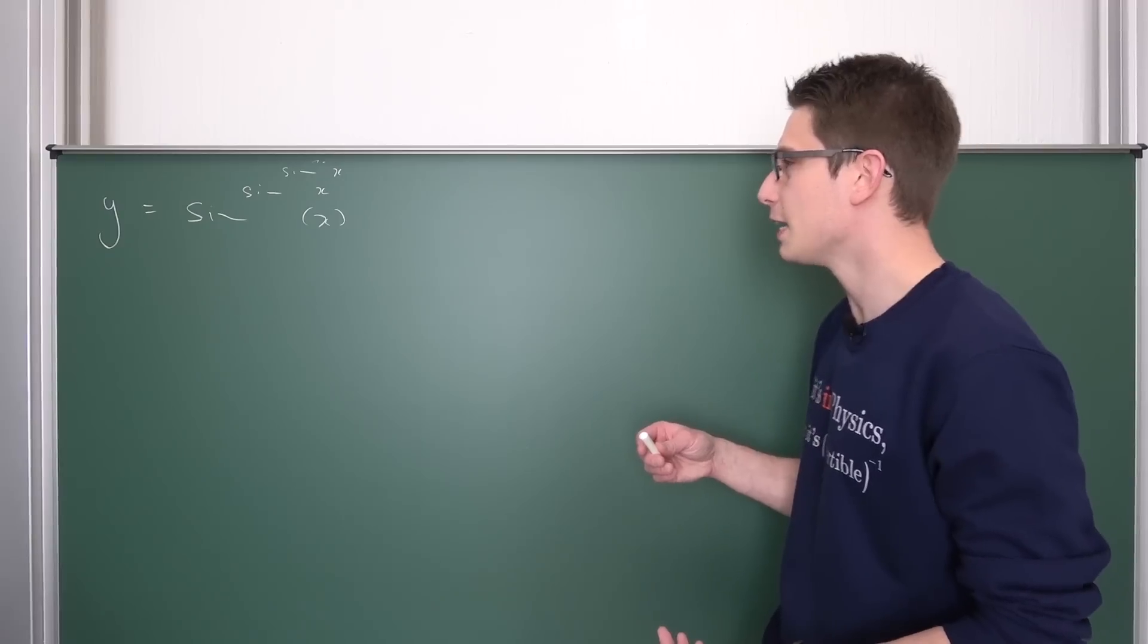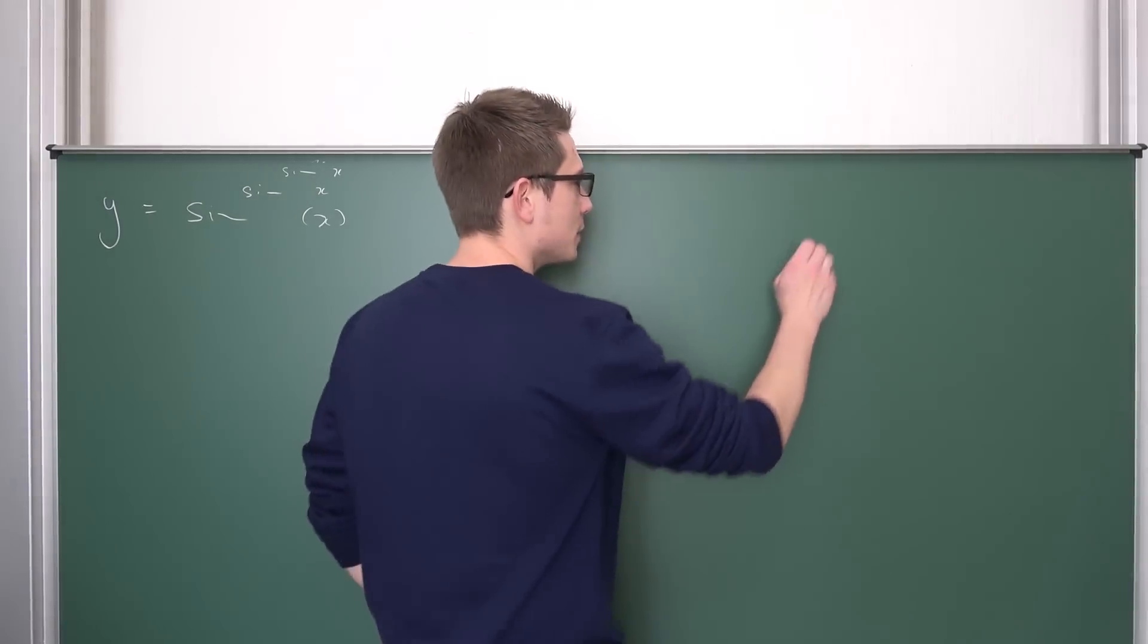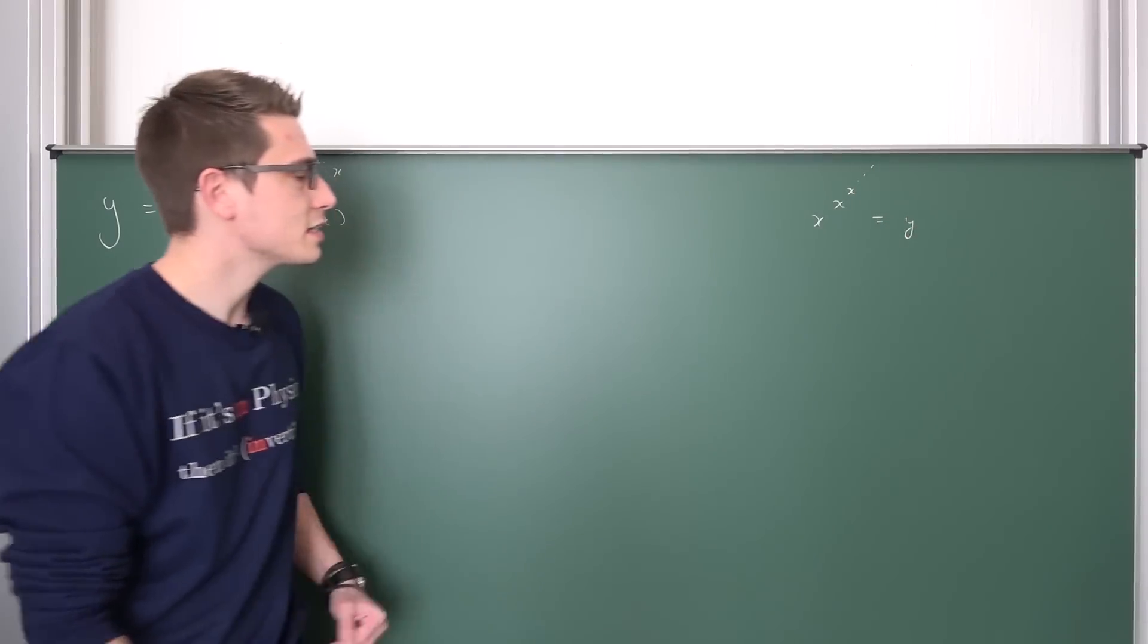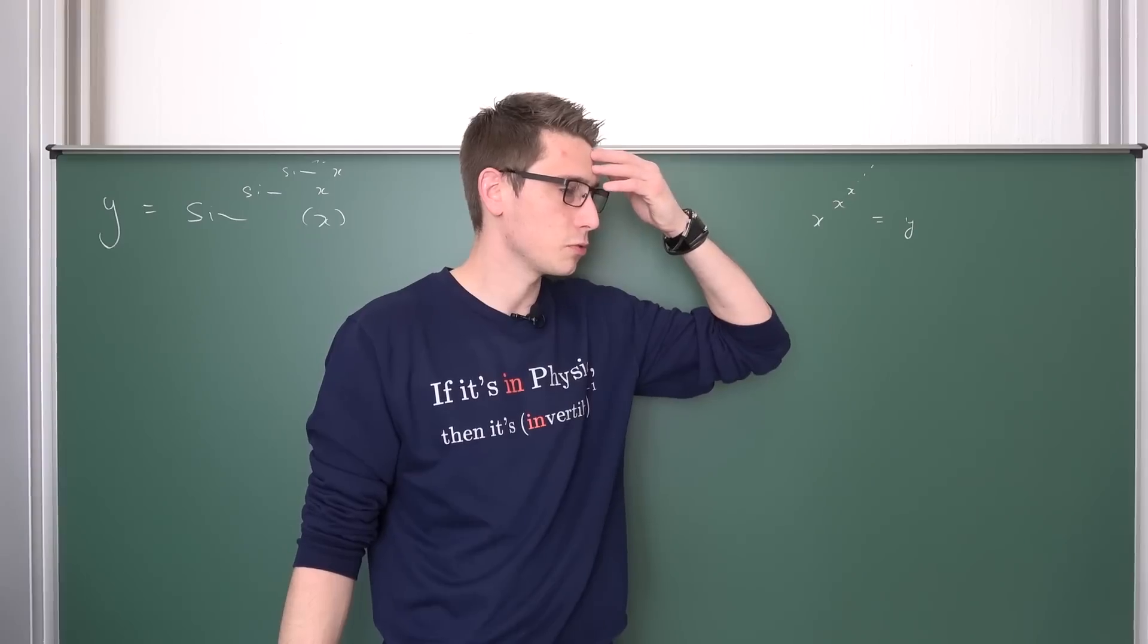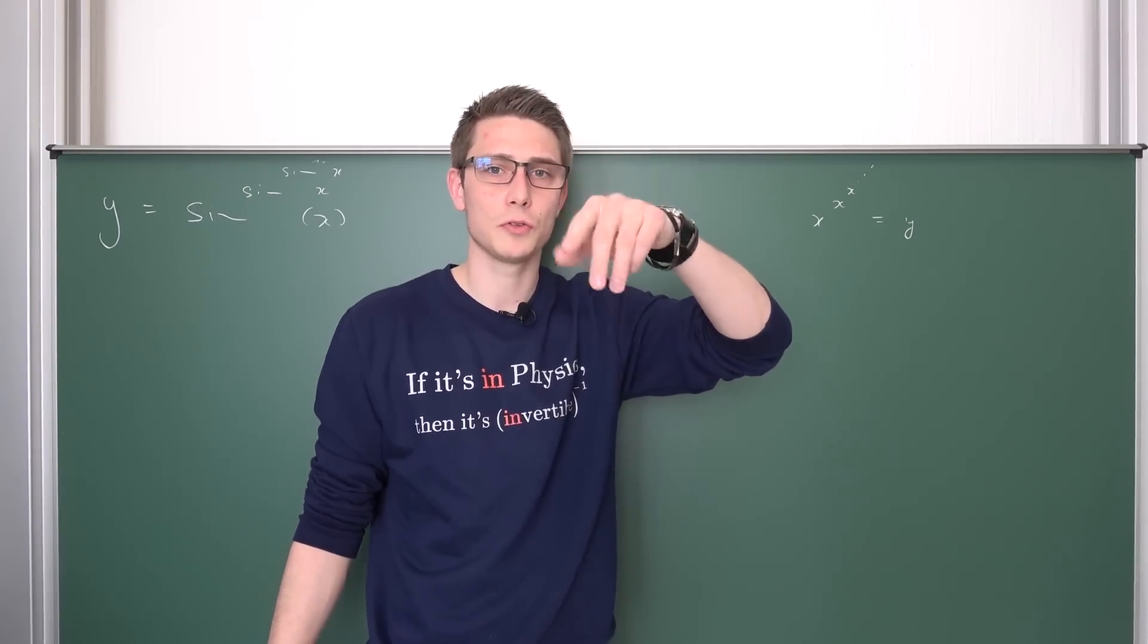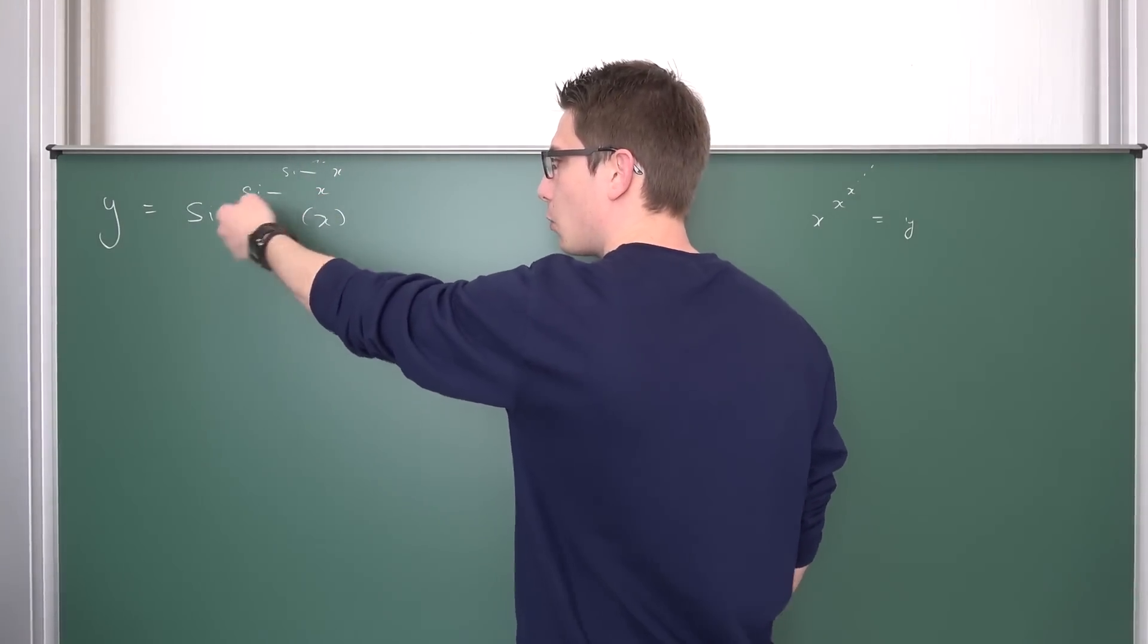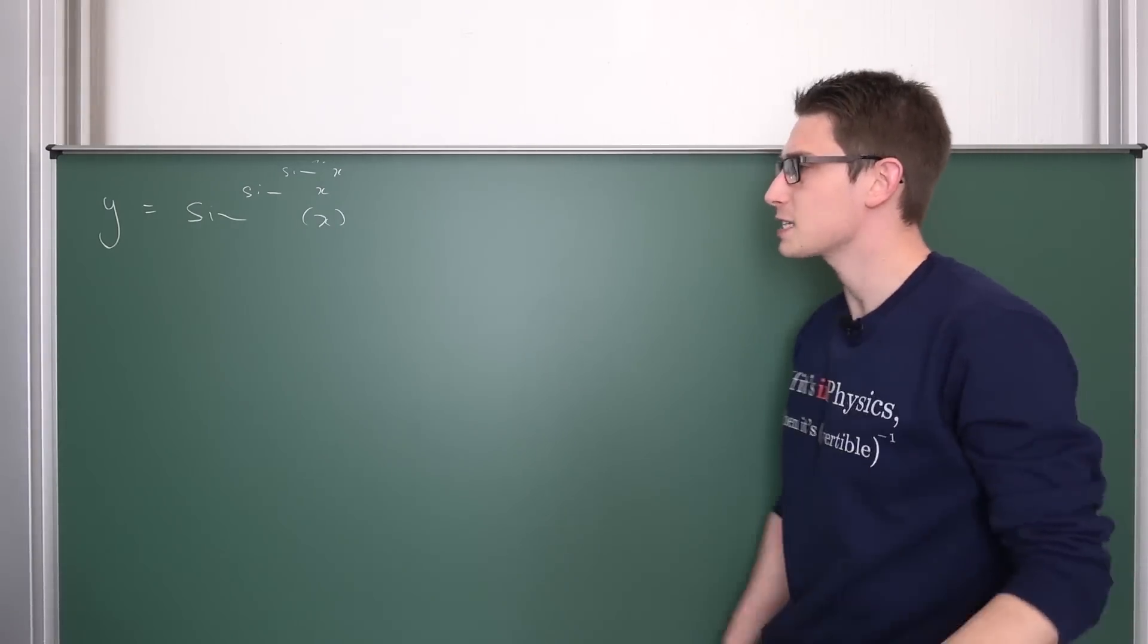It converges for all x if I'm not mistaken, because if you have an infinite power tower, for example x to the x to the x blah blah blah being equal to some y of x, then this thing converges if x is less or equal to the square root of e. And square root of e is more than one, and this thing is bounded between one and negative one, so it should converge for all x values. But don't take me for my word here, it really doesn't matter.